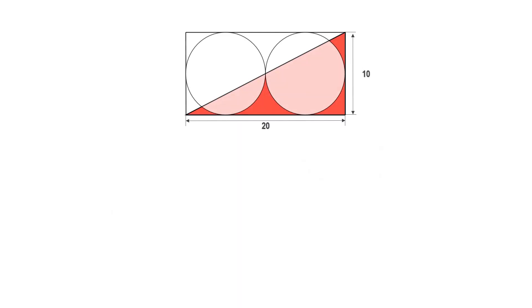For area of the circle, it is πr². π value everyone knows, which is 22/7 or 3.14. Next we need the radius of the circle.